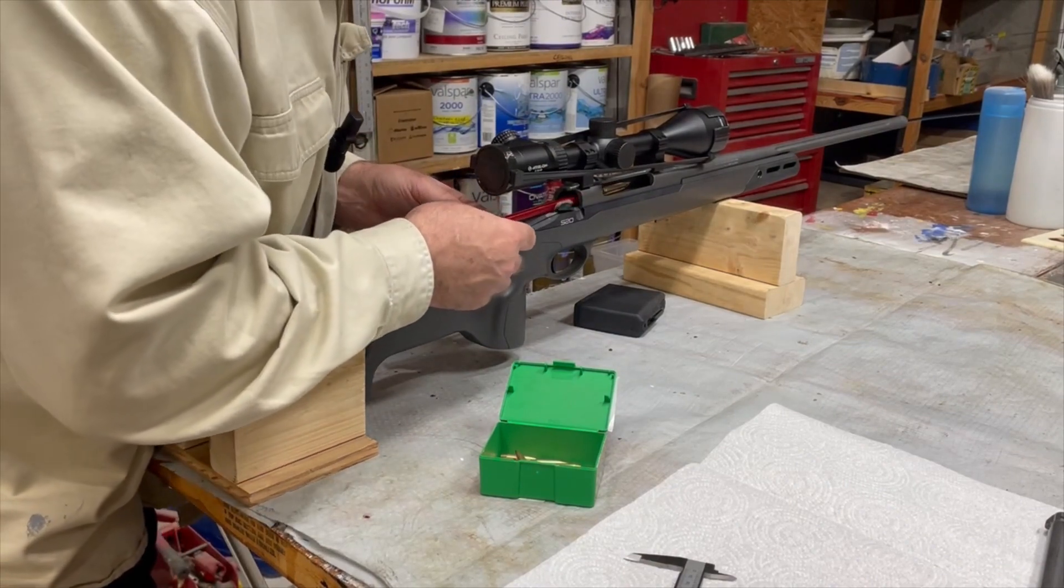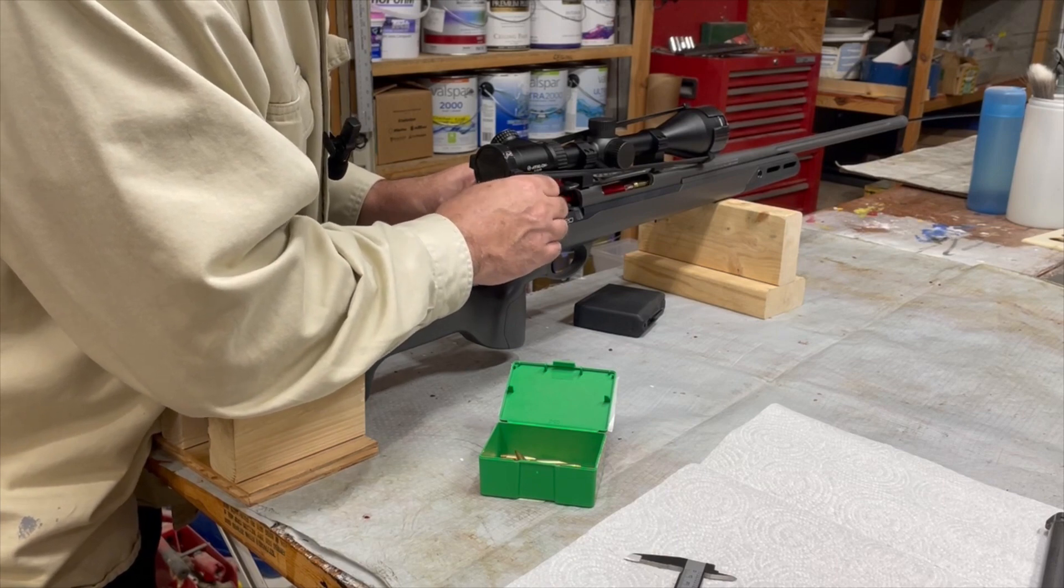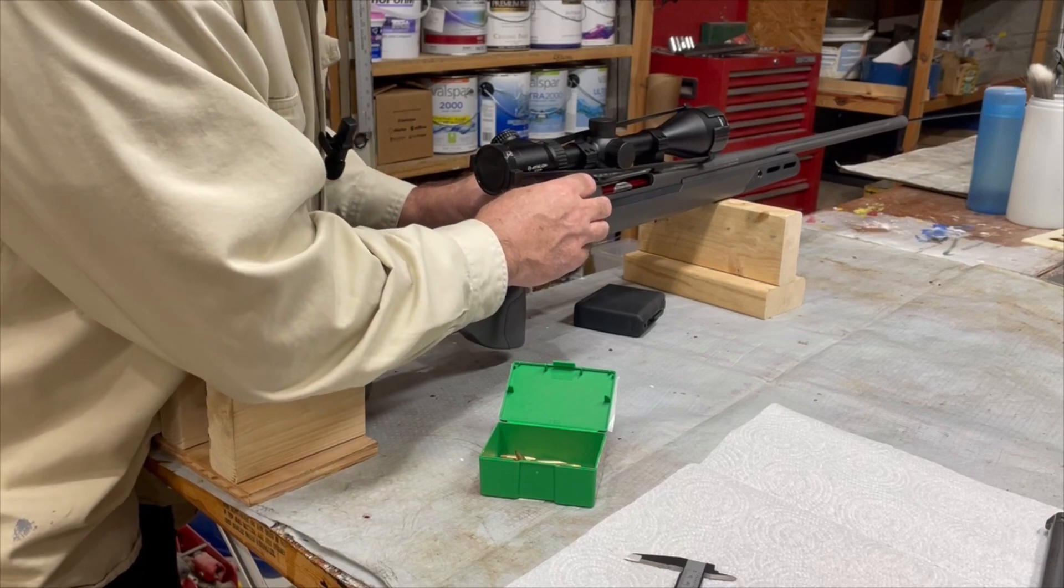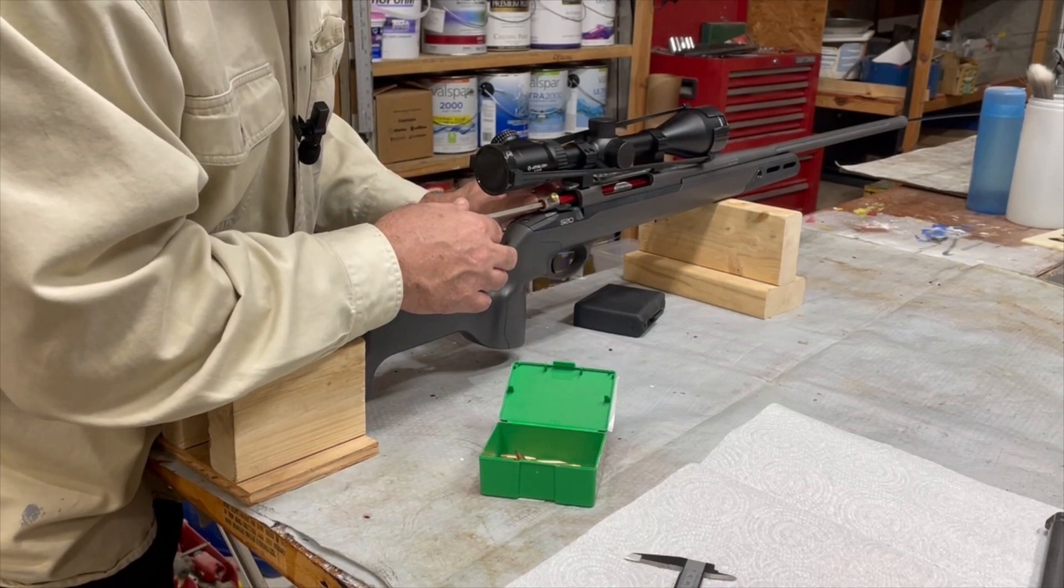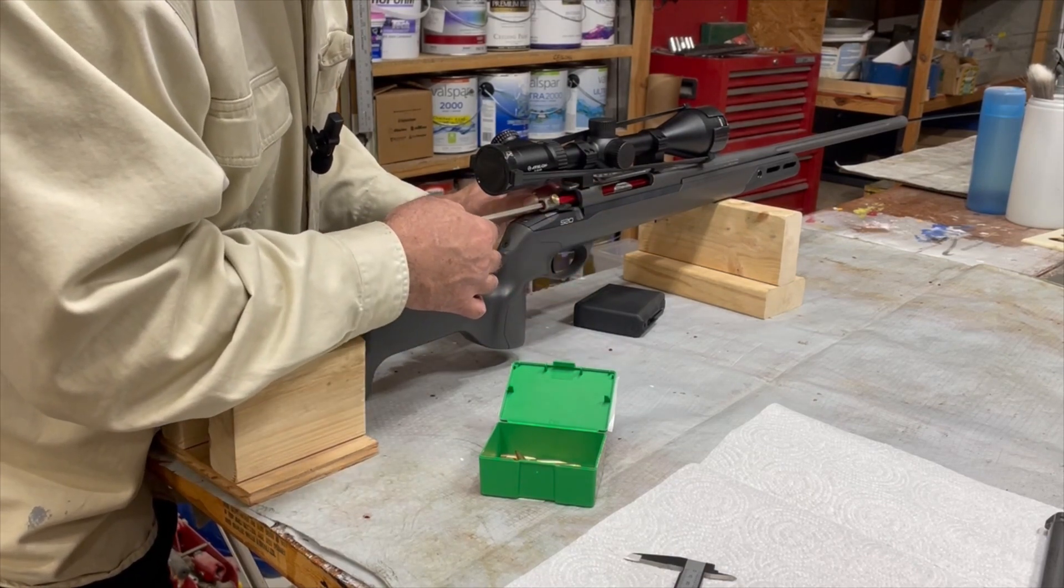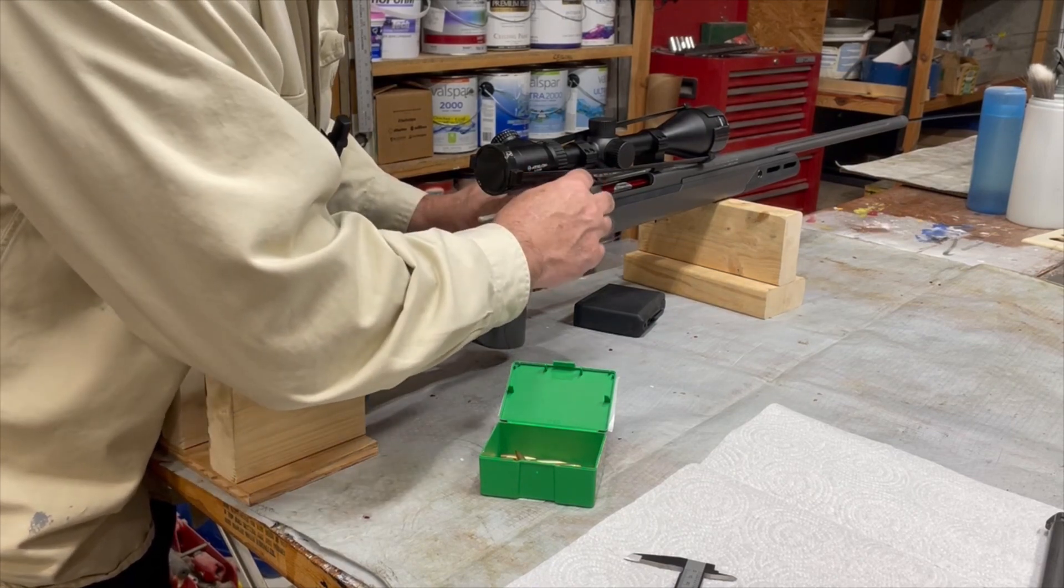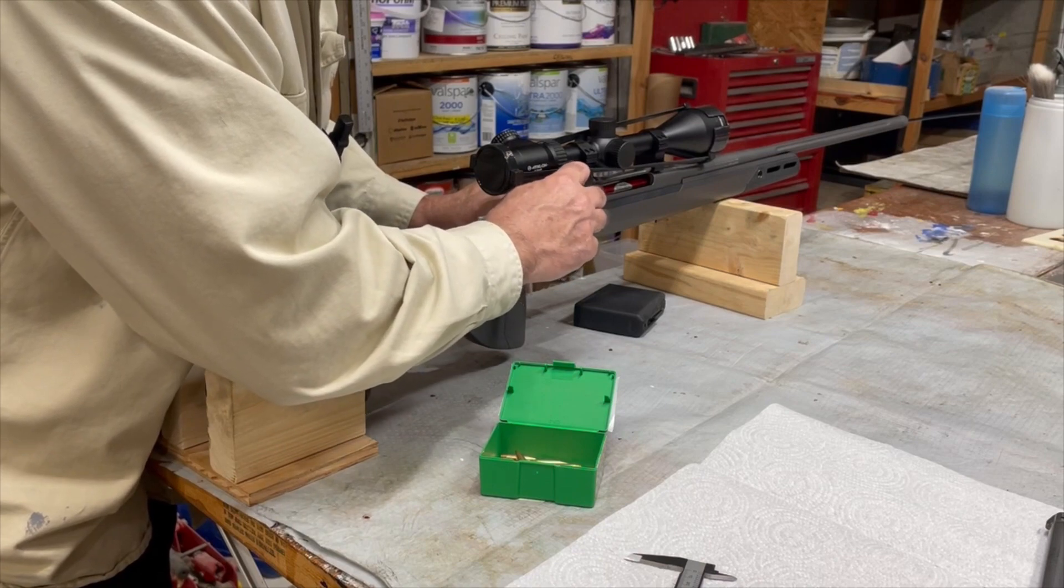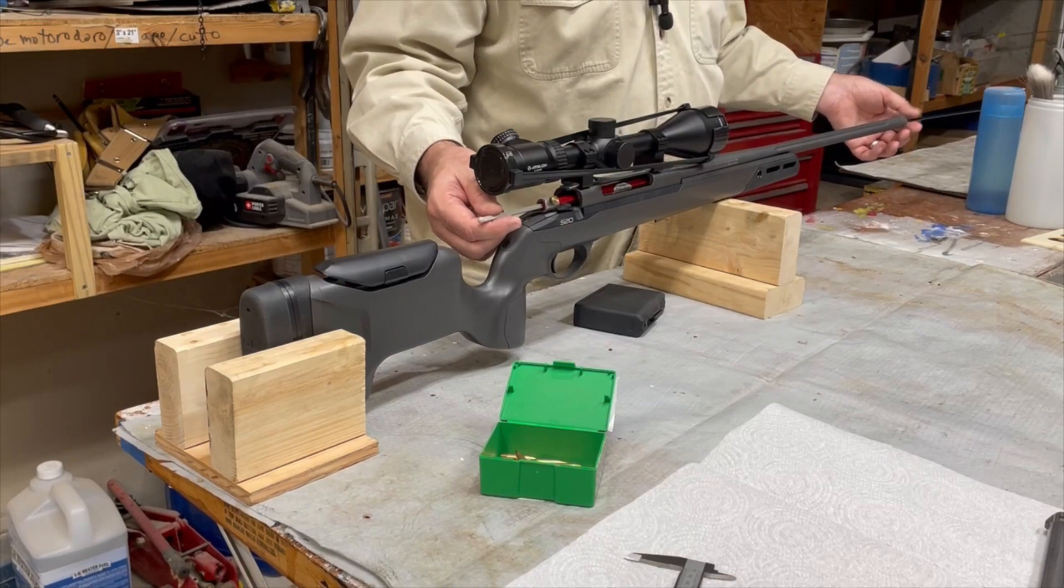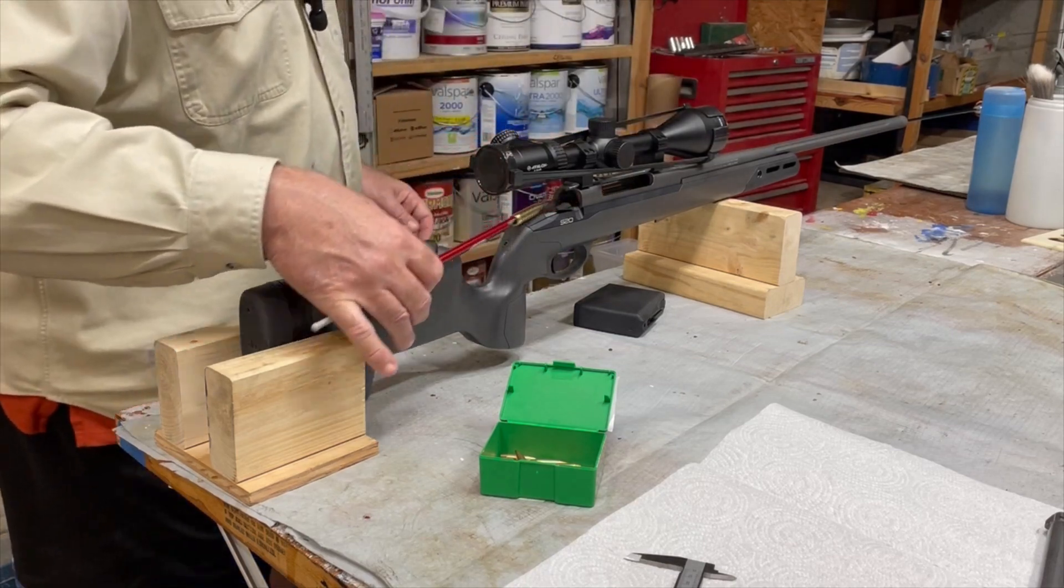We insert the case into the rifle, and we push that all the way in until we feel the shoulder touching the inside of the chamber. Then we take this rod, we gently push it forward until that bullet just contacts the rifling. We lock it down, and I use a cleaning rod to push that out. Otherwise, the bullet will stick to the rifling on the inside.